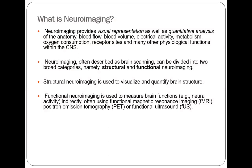So what is neuroimaging? Neuroimaging provides visual representation as well as the quantitative analysis of the anatomy, blood flow, blood volume, electrical activity, metabolism, oxygen consumption, receptor sites, and many other physiological functions within the CNS.